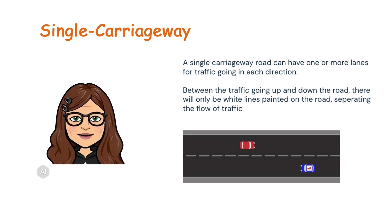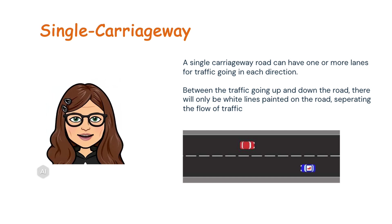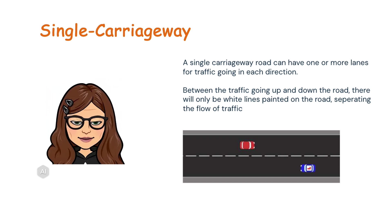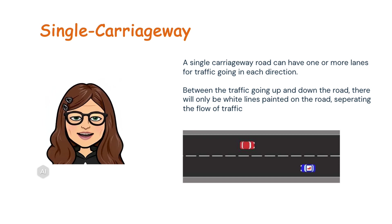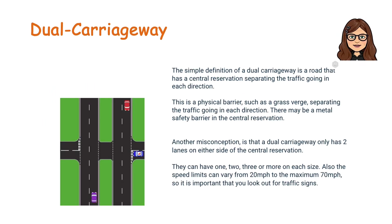Firstly, let's look at the difference between a single and dual carriageway. A single carriageway road can have one or more lanes for traffic going in each direction. Between the traffic going up and down the road, there will only be white lines painted on the road separating the flow of traffic.